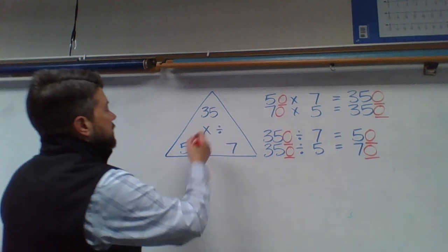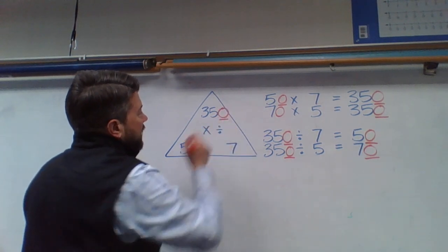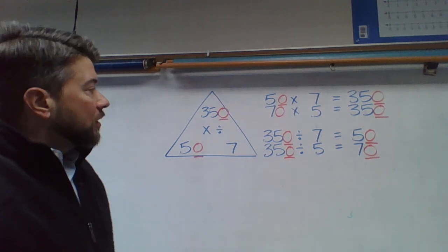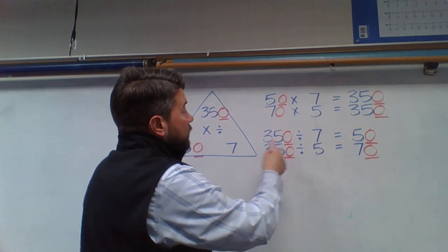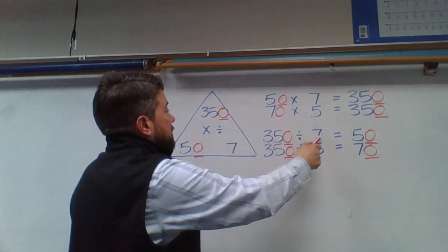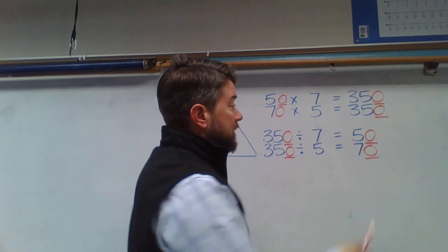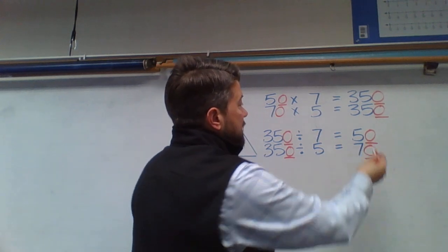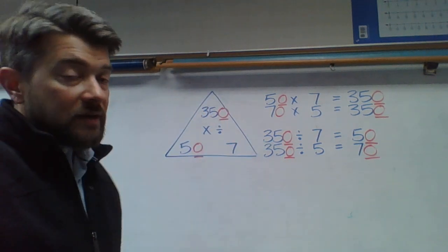So all I've done is added a 0 to one of the factors, and by doing so, I have to add a 0 to the product. Or, in other words, if it's a division problem, I start out with my dividend, divide it by my divisor, and then my quotient, or my division answer, has to have the same number of 0s that I started with in the dividend.